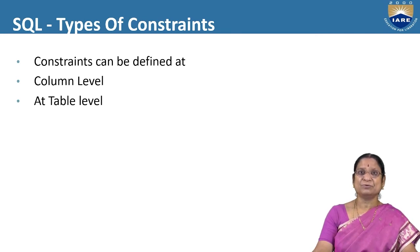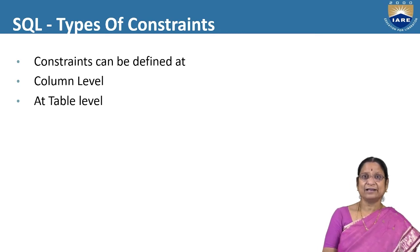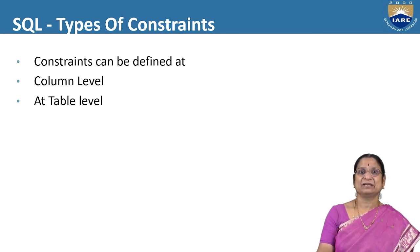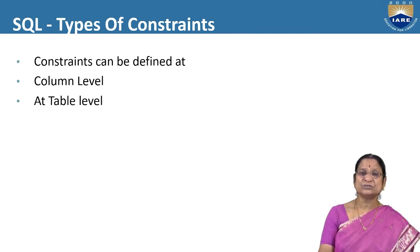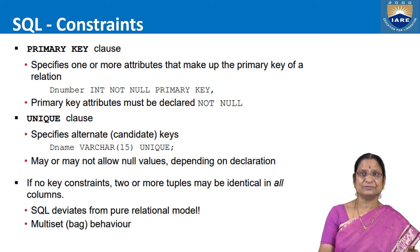While defining the create command, we need to introduce constraints. We already discussed various types of constraints theoretically — what is primary key, candidate key, referential integrity, etc. How these constraints are implemented in SQL is what we discuss now. Constraints ensure the integrity of the database. They are defined at two levels: column level and table level. SQL supports primary key constraint, unique constraint, foreign key constraint, and check constraint.